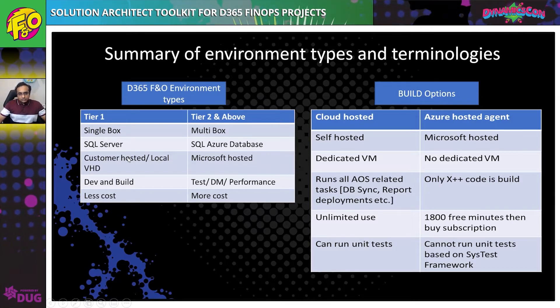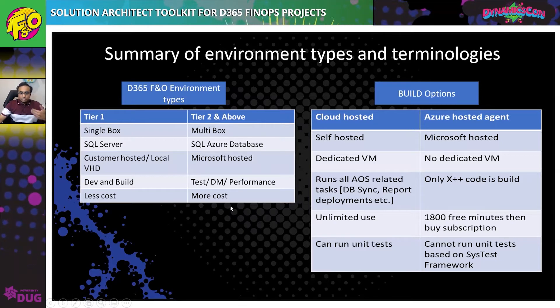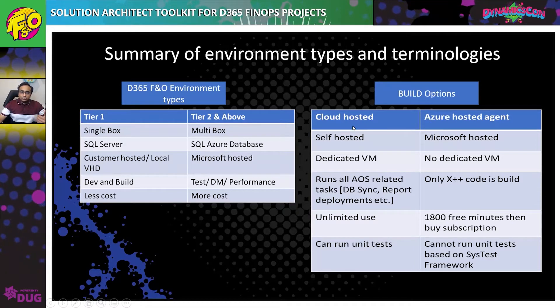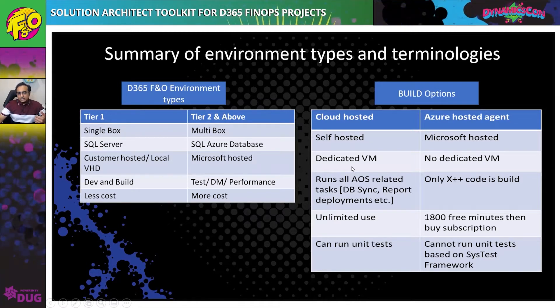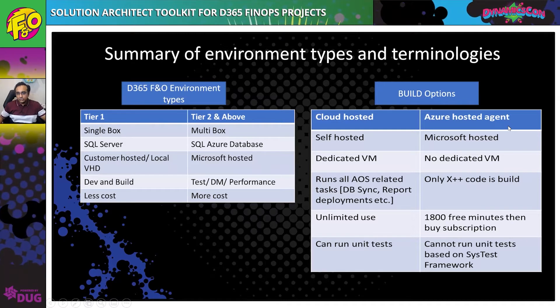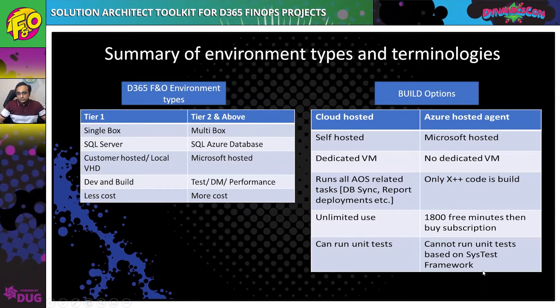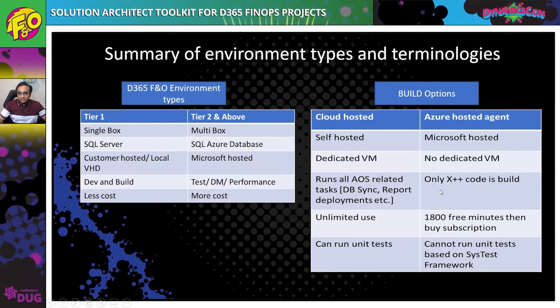Tier 2 and above environments are hosted in the Microsoft subscription, meaning you pay a fixed price rather than pay-as-you-go. Tier 2 machines are more costly, so it is important to plan for them in advance as it also takes some time for Microsoft to provision them in your LCS instance. When it comes to building code, you can either host your own cloud VM as a Tier 1 build machine, or use Azure-hosted build agents which is the new serverless approach. The caveat with Azure-hosted agents is that you can only build X++ code and cannot run Sys Test unit tests — if that's not a problem, Azure-hosted agents are recommended. Solution architects should understand these differences and decide with their technology architect what's best for the project.